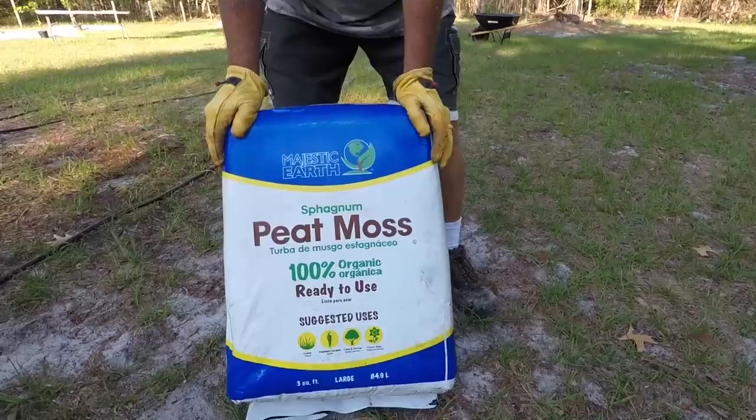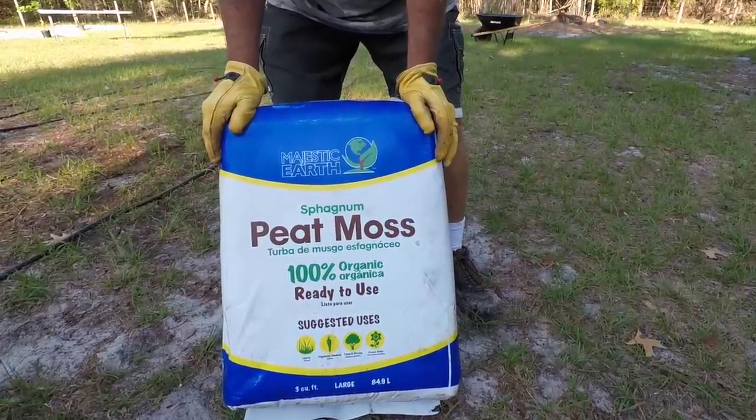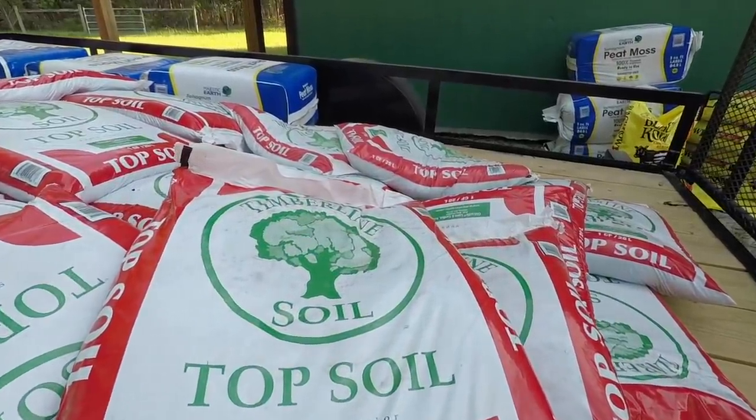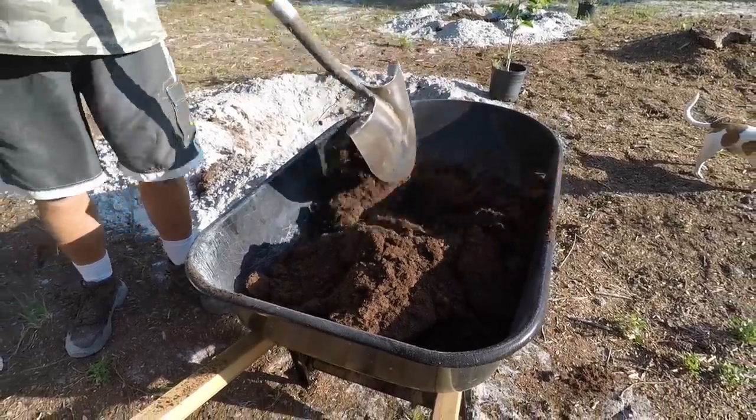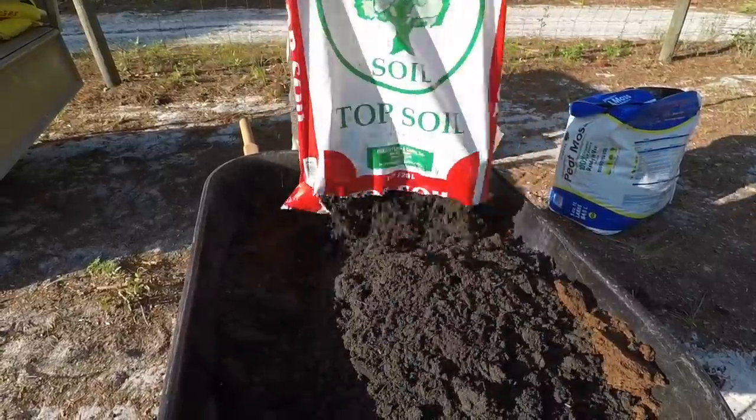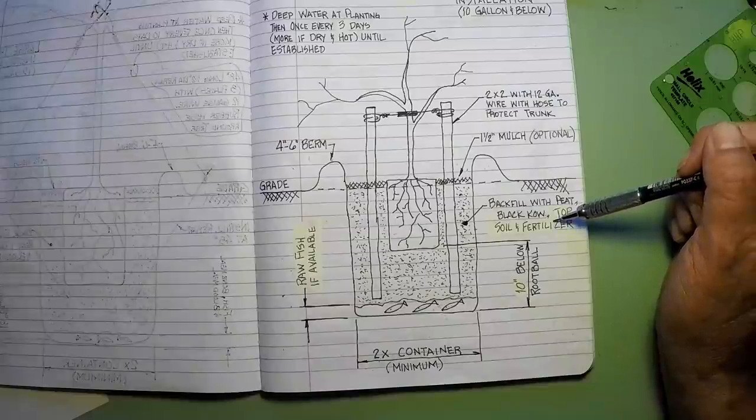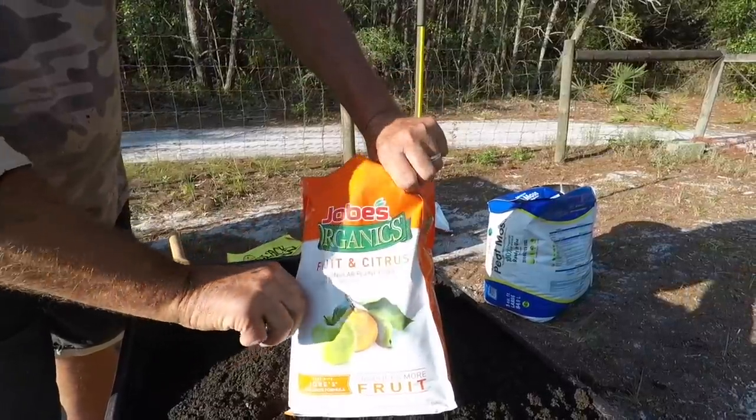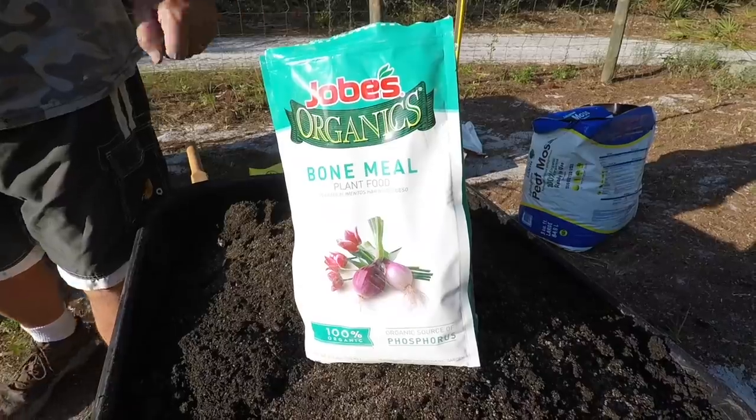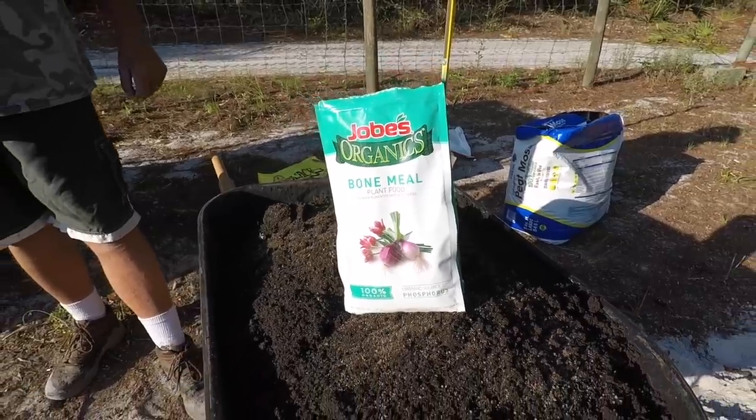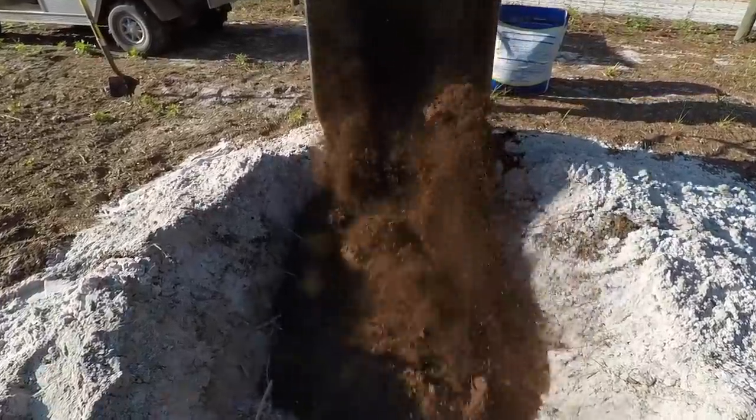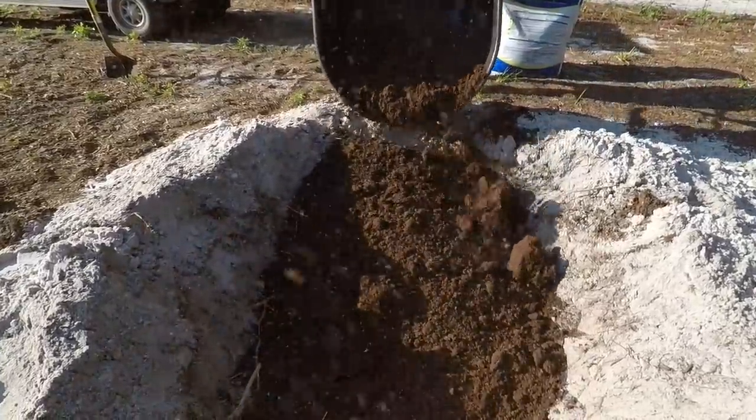I backfill that with three equal parts of peat, black cow manure, and topsoil. I just mix it up in my wheelbarrow and blend it all together. During that time I'll also add in whatever fertilizer that I think I need. In my case, I'm using citrus and fruit tree fertilizer, it's an organic fertilizer, as well as some bone meal. I mix that in the wheelbarrow, spin it all together and dump it into the hole. I keep doing that process until I fill the hole all the way back up.